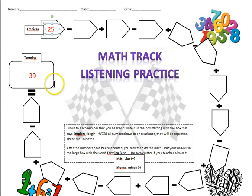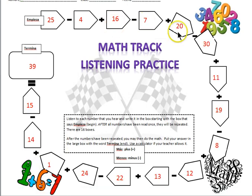So, the first one, veinticinco, cuatro, dieciséis, siete, veinte, treinta, once, diecinueve, ocho, doce, trece, veintidós, veinticuatro, uno, catorce, y quince.